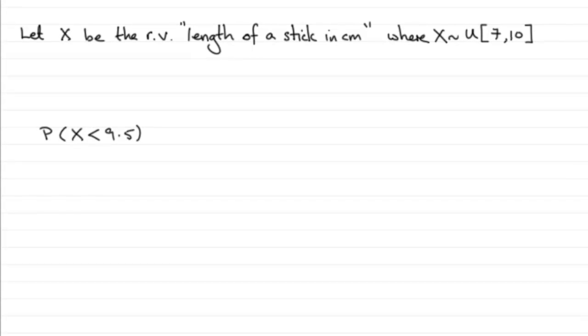In the first part of this question, I've defined a random variable X. Let X be the random variable length of a stick in centimeters, where X is distributed uniformly over the interval [7, 10].